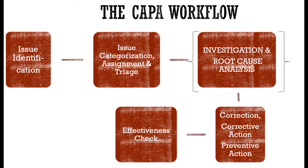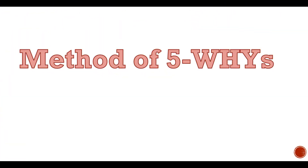Once basic assignment and triage is done, the time would come for the investigation and root cause analysis. This is the most crucial part of CAPA management, because if you don't do investigation and root cause analysis properly you are not going to find out the actual causes of the deviation, and hence your preventive or corrective actions would have little value. So having said that, let's look at the two most prevalent methods at our disposal and review how best we can use them.